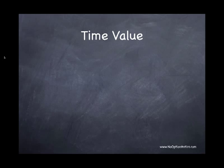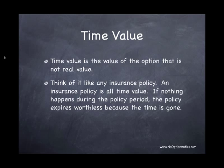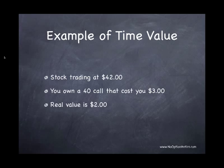The other portion is time value — it's the value that's outside of the real value of the option. Like an insurance policy, which is all time value; there's no real value unless something actually happens. For example, if you have the stock trading at $42 and you own a $40 call that cost you $3, the real value was $2 because you could buy the stock for $40 while everyone else paid $42. If the option costs $3 and $2 of that is real value, then the time value is $1 — the remaining amount.